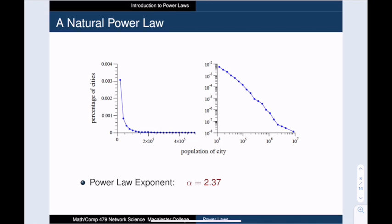About 10 years ago, researchers found that the best-fitting power law for the current city populations adhered to a power law using alpha equal to 2.37.